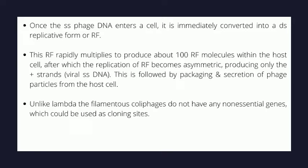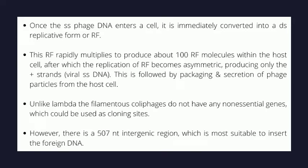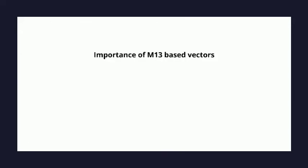Unlike lambda, the filamentous coliphages do not have any non-essential genes which could be eliminated to create space or used to make cloning sites. However, there is a 507-nucleotide intergenic region which is most suitable to insert foreign DNA, and so their MCS are inserted there.